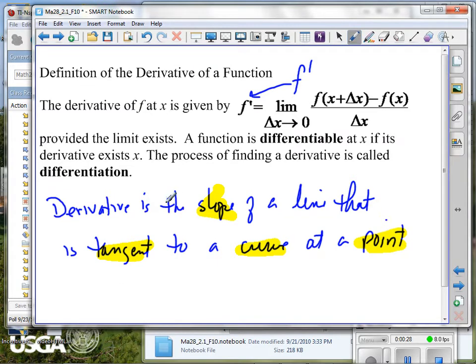So derivative is the measure of slope, and it is the slope of a line, the measure of a slope of a line, a very special line though, a tangent line. Tangent to what? Well, to a curve, to the function graph at a specific point.